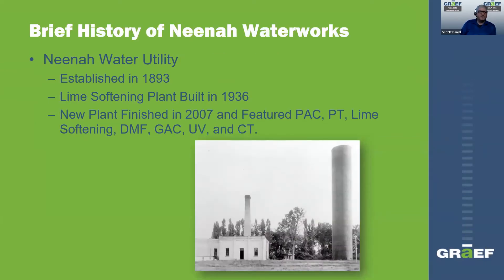The water utility was established back in 1893 when they built a ground water plant. And like many in Wisconsin, the water had an extremely high calcium hardness level of 1,000 parts per million — like drinking a glass of lime water. After more than 40 years of this, they decided to build a lime softening plant that was completed in 1936. Their newest plant, completed in 2007, has powdered activated carbon, pre-treatment basins, lime softening, dual media filters, granulated activated carbon, ultraviolet disinfection, and contactor basins.